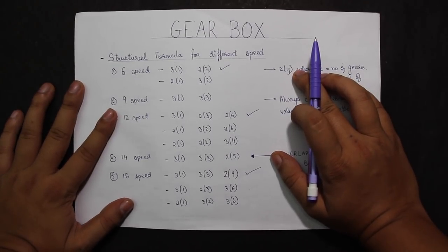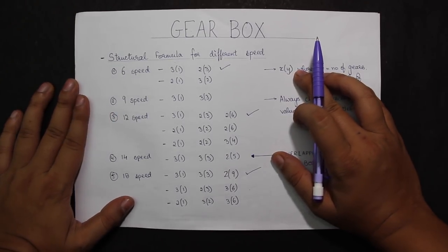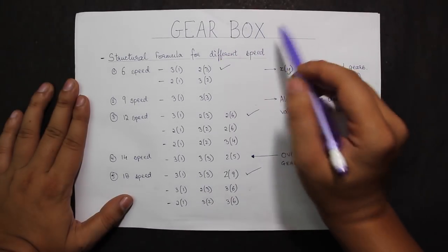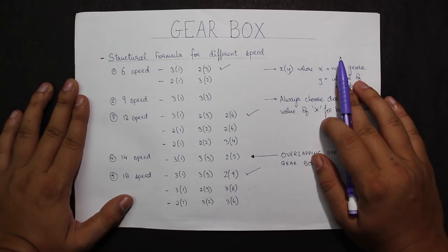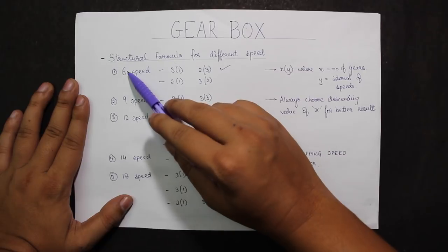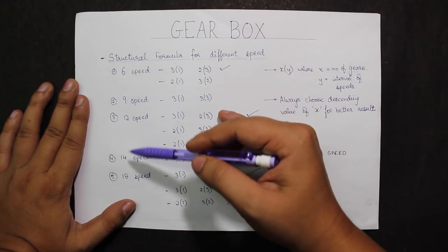RoboMectricks now presents videos on designing gearboxes, starting with the speeds. We have five different speeds available to create a gearbox: 6-speed, 9-speed, 12-speed, 14-speed, and 18-speed.